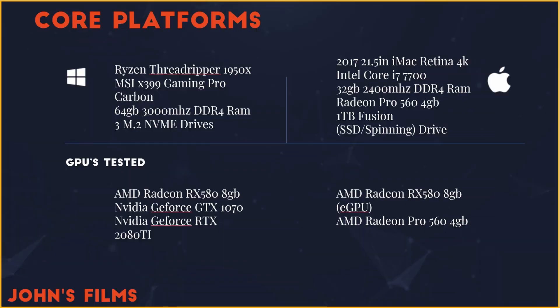Our PC configurations today are based on two platforms. In the Windows camp: a Ryzen Threadripper 1950X with the MSI X399 Gaming Pro Carbon motherboard, 64GB of 3000MHz DDR4 RAM, and three M.2 NVMe drives. In the Apple camp, we have a 21.5-inch 2017 iMac Retina 4K with an Intel Core i7-7700 processor. It has 32GB of 2400MHz DDR4 RAM, and a Radeon Pro 560 4GB graphics card, along with a 1TB Fusion drive, which is part SSD, part spinning.